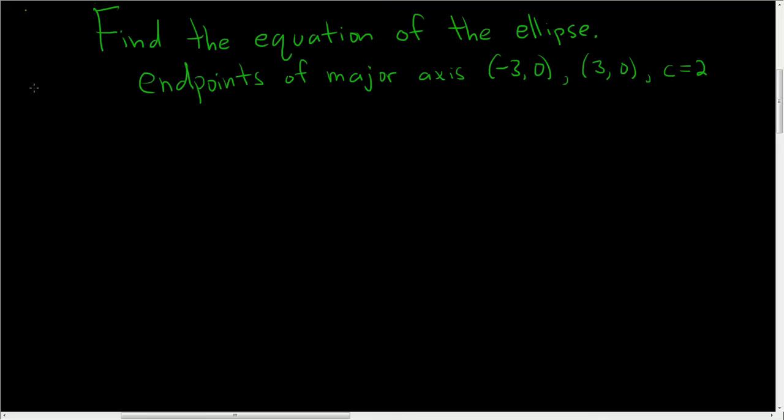To find the equation of the ellipse, we're given the endpoints of the major axis and we're told the value of c, so solution.